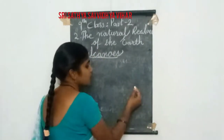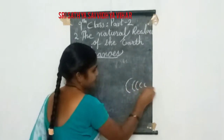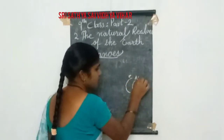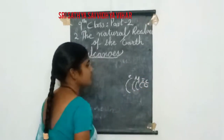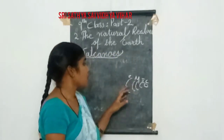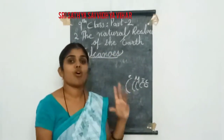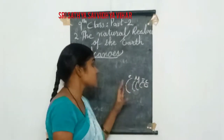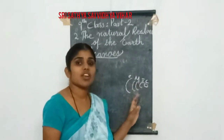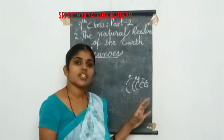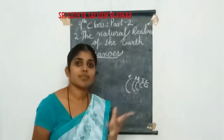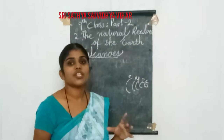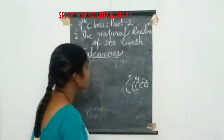We have already discussed the three layers of the earth: the crust, the mantle, the inner core, and the outer core. The mantle and core are in liquid form inside the earth because there is a lot of heat inside the earth. If a thing gets heat, it will automatically change its form from solid to liquid. In the same way, the mantle is like a liquid.